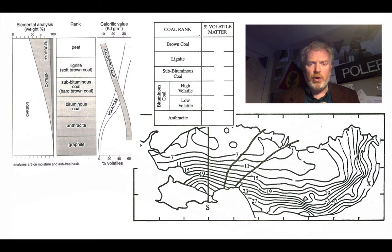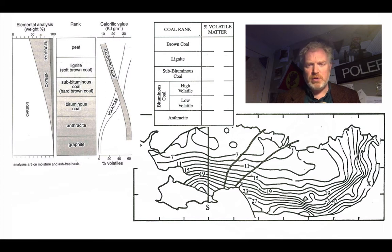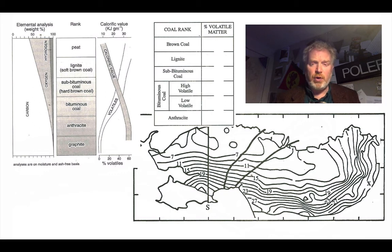We can also find variations in the rank of coal across the coalfield itself. The map that you have is for one particular coal seam — the five foot coal seam — but it gives us an indication of the distribution of different ranks of coal across the coalfield.